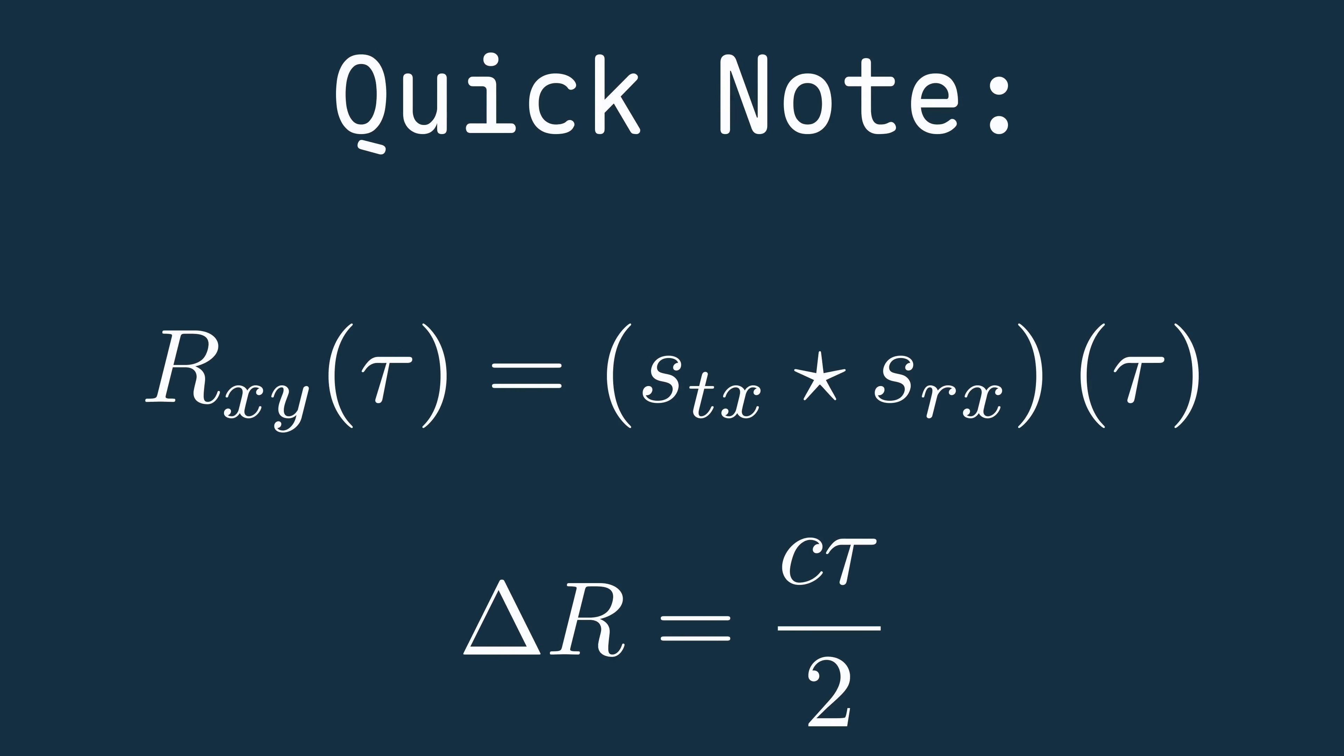Just a quick note though, this pulse width tau is different from the tau in the previous cross-correlation equation. This is the pulse width, and this is the time lag that we swept the transmit pulse over.